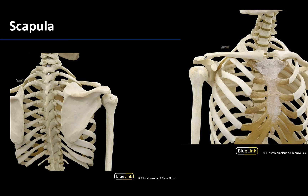We will be spending quite a bit of time on the scapula in upcoming sessions, but for now just a reminder of the location of this bone. It is often referred to as the shoulder blade and can be seen from an anterior view in terms of its projections and the glenoid fossa. It's really most prominent when looking at a posterior view, where you can really see the body and size of the scapula.